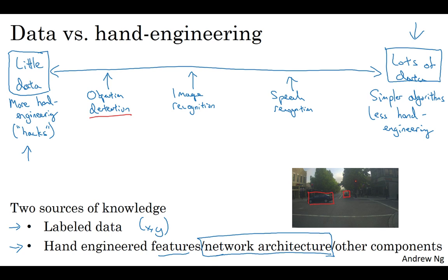I think that has resulted in a significant reduction in the amount of hand engineering that's being done. But there's still a lot of hand engineering of network architectures in computer vision, which is why you see very complicated hyperparameter choices in computer vision, more complex than you do in a lot of other disciplines.